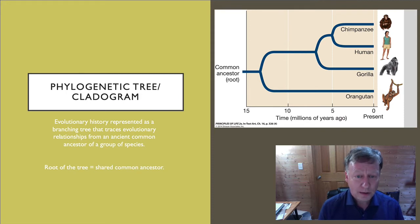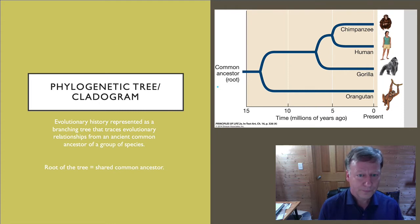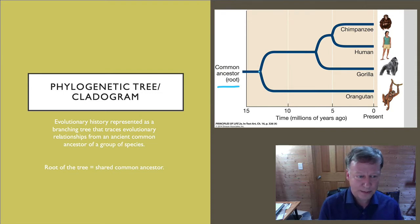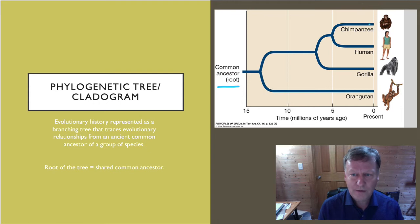In our cladogram on the right, we have our common ancestor right here, and over time, this common ancestor has been a lineage that is divided into multiple sub-lineages, giving rise to the great apes — orangutans, gorillas, humans, and chimpanzees. The common ancestor is the root of the tree, that's where it all started, and then we have multiple branches to modern day.